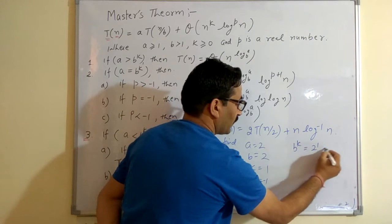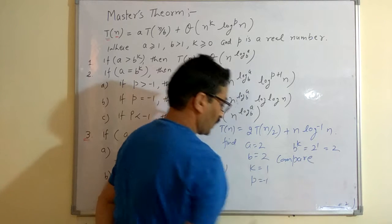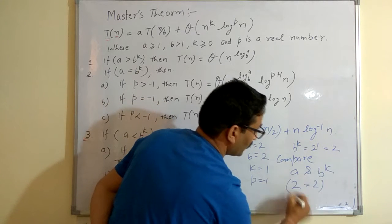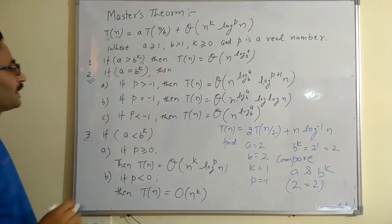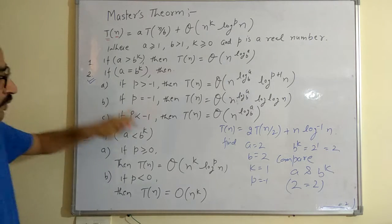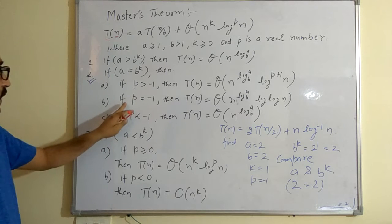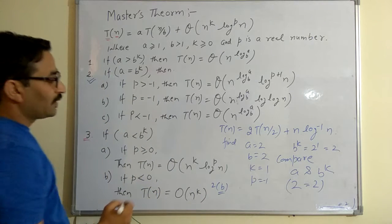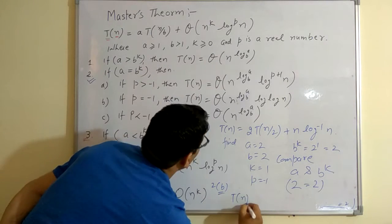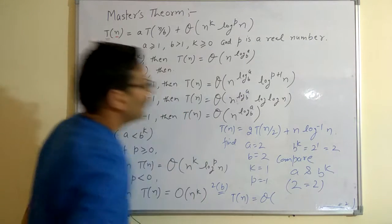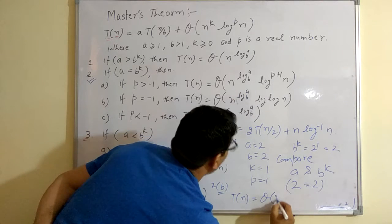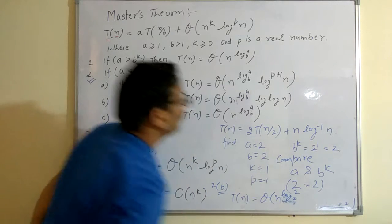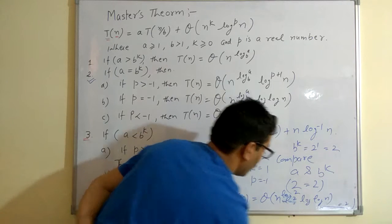For the next example, b^k is equal to 2. Compare A and b^k: A is 2 and b^k is 2, so A is equal to b^k. Then we apply the second case. The value of p is equal to minus 1. Since p equals minus 1, apply formula 2B. The answer is T(n) is equal to theta of n raised to log base b of a, times log of n.